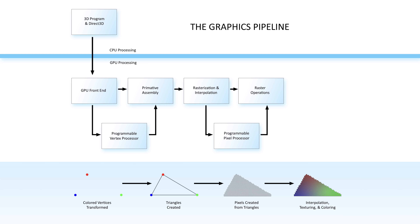Traditionally, the output of the pixel processor has been the final colored pixels on the screen, which then go through some final raster processing before being output. However, modern game engines use deferred lighting, which means the pixel processor is outputting color, normal, metal mask, and roughness data instead of final lit results. This data is written to a G-buffer, and then the final lighting calculations happen with the data from those buffers in a separate pass. The main thing to take away from this understanding of the graphics pipeline is where in the pipeline your shaders are running and where the bottlenecks are.